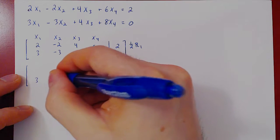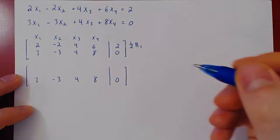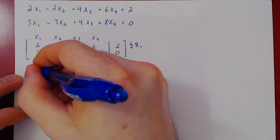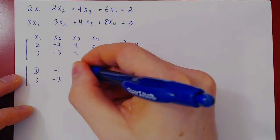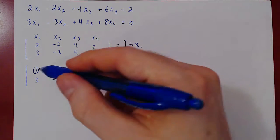We can recopy row 2, as we're not changing it. If you multiply row 1 by 1 half, you get 1, negative 1, 2, 3, 1. Now we have our leading one in the top row.